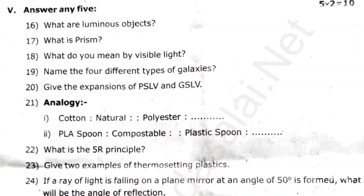What are luminous objects? What is prism? What do you mean by visible light? Name the 4 different types of galaxies. Give the expansion of PSLV and GSLV. What is the PR principle? Give two examples of thermosetting plastics. If a ray of light is falling on a plane mirror at an angle of 50 degrees, what will the angle of reflection be?